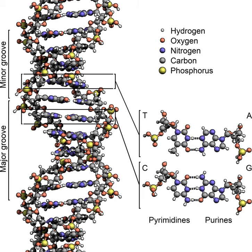At the ends of the linear chromosomes are specialised regions of DNA called telomeres. The main function of these regions is to allow the cell to replicate chromosome ends using the enzyme telomerase, as normal DNA polymerases working on the lagging strands cannot copy the extreme 3' ends of the DNA templates. If a chromosome lacked telomeres, it would become shorter each time it was replicated.